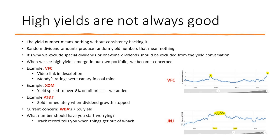High yields are not always good. When it comes to dividend investing, probably the most common mistake I see investors make is that the yield number for a stock means absolutely nothing unless there's some consistency backing it. Random dividend amounts produce random yield numbers that mean nothing — they only reflect the last payment. Consistency is what puts meaning behind a yield number. That's also why we exclude special or one-time dividends from the yield conversation, because they're not predictable — they're one-off occurrences.